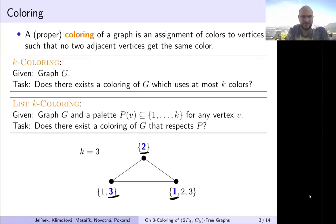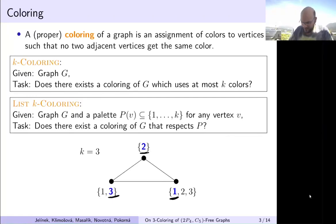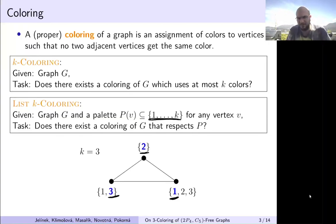Don't confuse this problem with the perhaps more famous problem of K-list coloring, where K restricts just the size of the list but the variables can be any colors. Here we really require the colors to be just sets from 1 up to K.